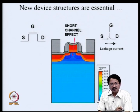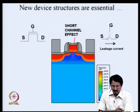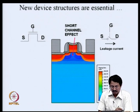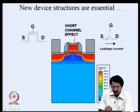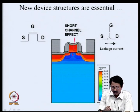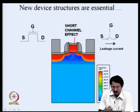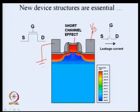New device structures are also very essential going forward. This is our conventional MOS structure — the metal oxide semiconductor field effect transistor. What we have done over the years in scaling is to reduce the gate length — the distance between the source terminal and drain terminal. In an n-channel transistor, the source terminal is at ground potential and a positive drain voltage is applied to the drain terminal.